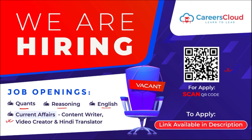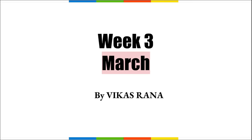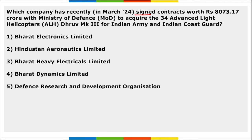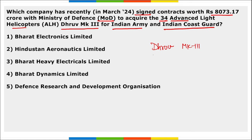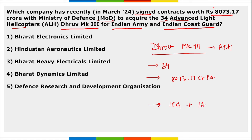In this video we'll discuss important current affairs for the third week of March. First question: which company recently signed contracts worth ₹8,073 crore with the Ministry of Defence to acquire 34 Advanced Light Helicopters Dhruv Mark 3 for the Indian Army and Indian Coast Guard? The answer is Hindustan Aeronautics Limited — HAL.